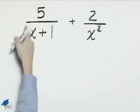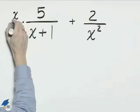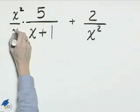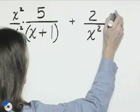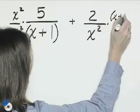We'll multiply this first fraction by x squared over x squared, and we'll multiply the second fraction by x plus 1 over x plus 1.